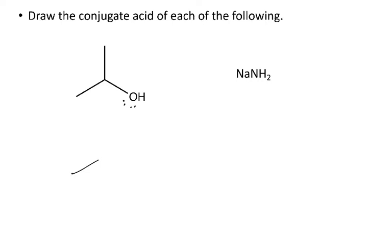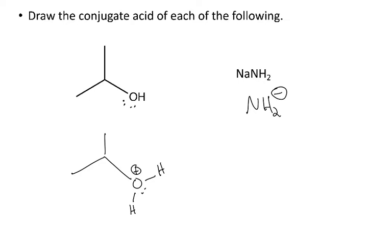The conjugate acid of the alcohol will still have one lone pair, and since we added an H+, that oxygen now has a positive formal charge. For the second compound, the sodium is just a counter ion, so what we're really interested in is NH2-. The nitrogen has two bonds and must have two lone pairs. When it accepts an H+, we end up with NH3 with one lone pair as the conjugate acid.